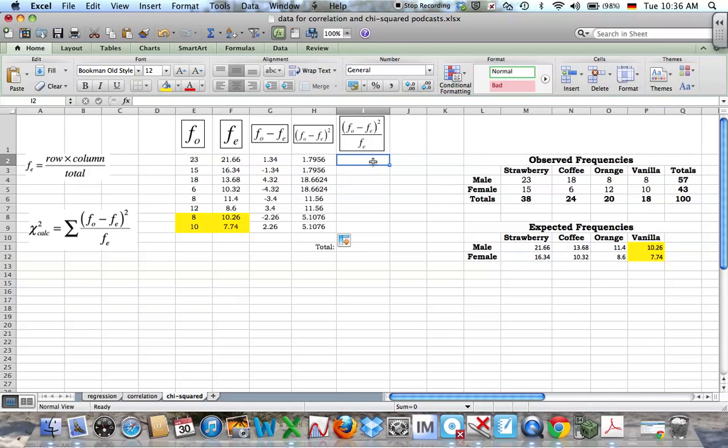Next thing says, divide that, the square, by the expected frequency. So equals, the square I already have, divided by the expected frequency, which is that one. And again, drag down.